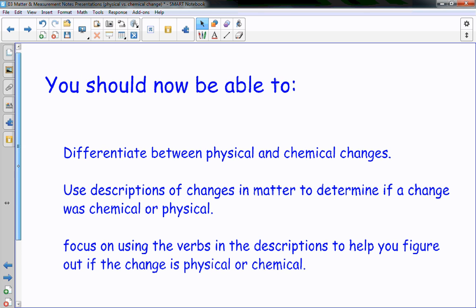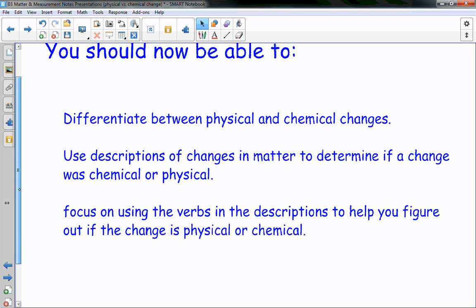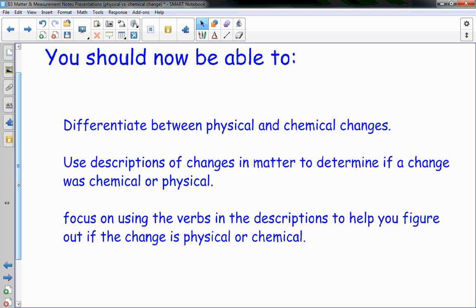So right now, you should be able to differentiate between a physical and a chemical change. Use descriptions of the changes in the matter to determine if a change was chemical or physical. Focus on your verbs in the description. Remember, burning, melting. Those are verbs. Things are happening. Those verbs are going to help you decide. Is it chemical change or is it physical change?